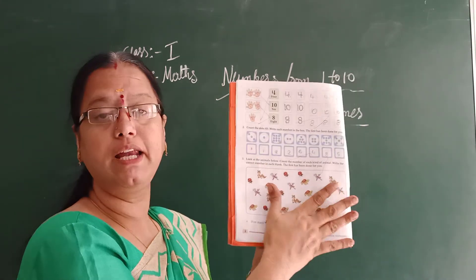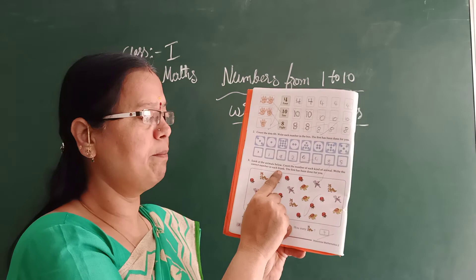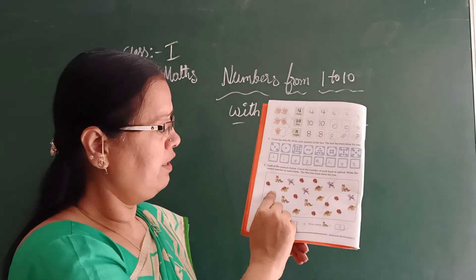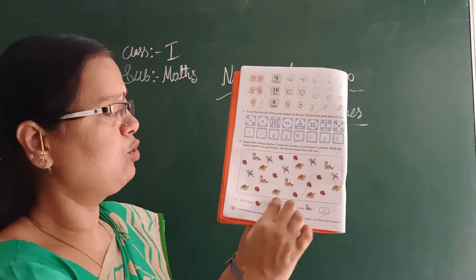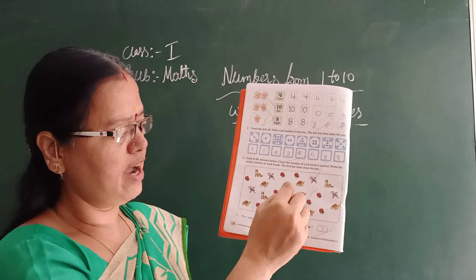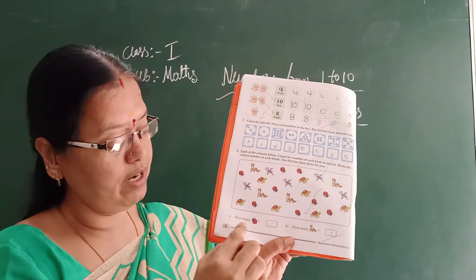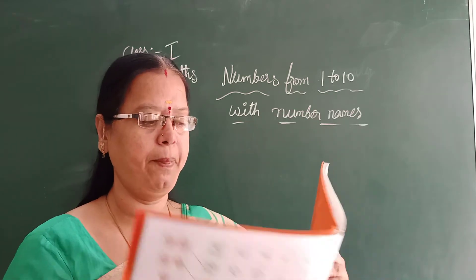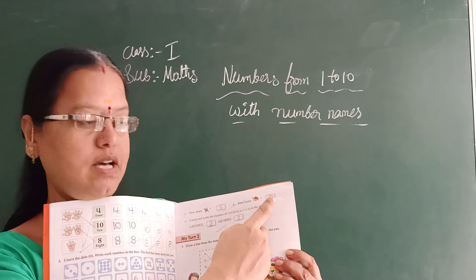See this picture — look at the animals. In the box some animals are there. Count the number of each kind of animal and write the correct number in the blank — the first one has been done for you. There are ladybugs, squirrels, sparrows, and tortoises. How many bugs are there? 1, 2, 3, 4, 5, 6, 7, 8, 9 — count carefully and write in the box. Count the squirrels, count the sparrows, and count the tortoises and write each number.